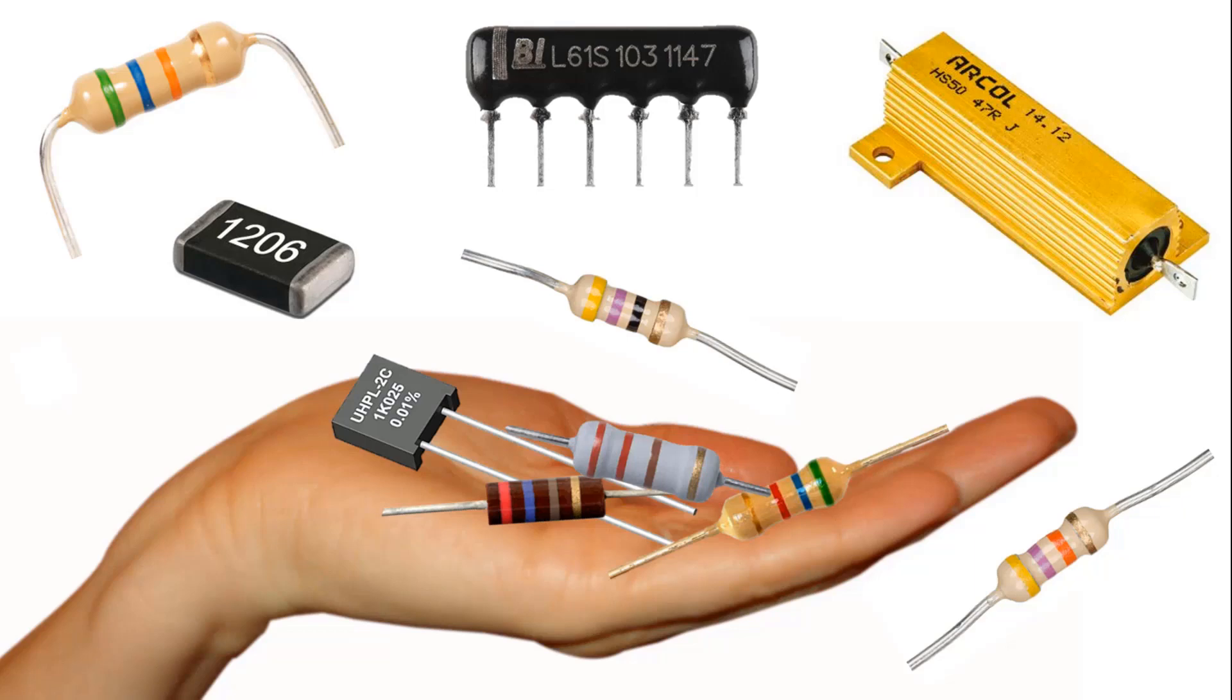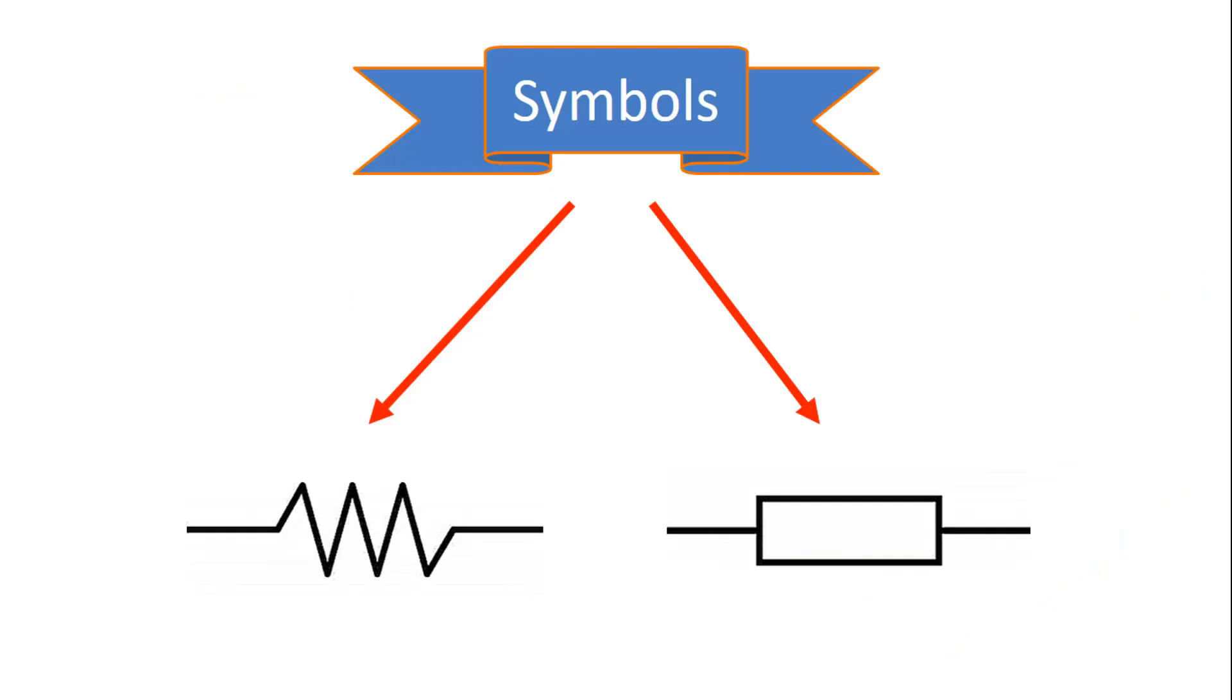The materials used in fixed resistors differ. The value of these resistors can either be written on or understood by looking at the color codes on them. There are two types of circuit symbols used for fixed resistors. It is possible to come across the use of both of these symbols.